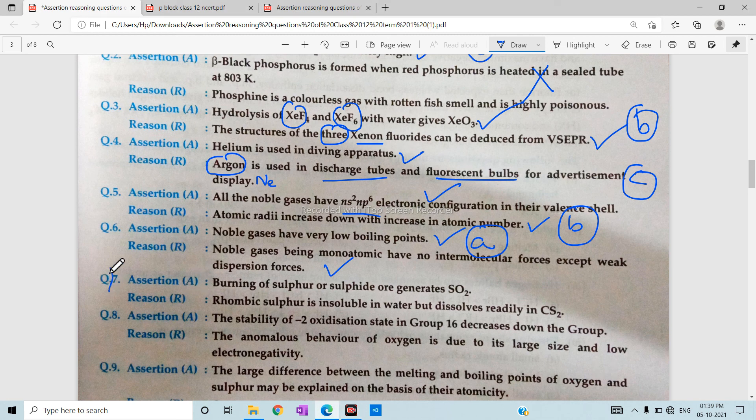After that, question number 7. Burning of sulfur sulfide generates SO2. Rhombic sulfur is insoluble in water but dissolves readily in CS2. This is the right explanation, so this answer will be B for question number 7.